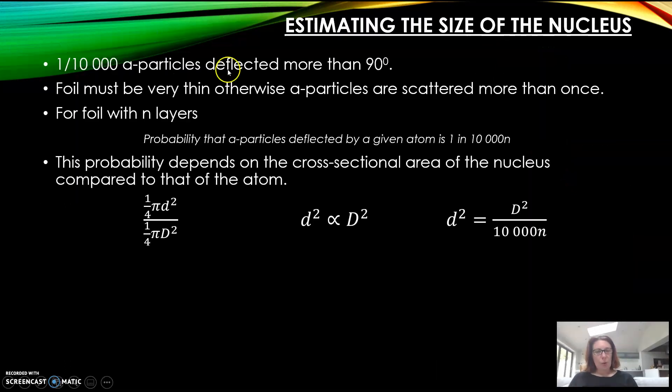Once you've got to this equation, you can rearrange it and find the diameter of the nucleus. A typical value for n, the number of layers, is about 10,000, and that's still a really thin piece of gold foil.